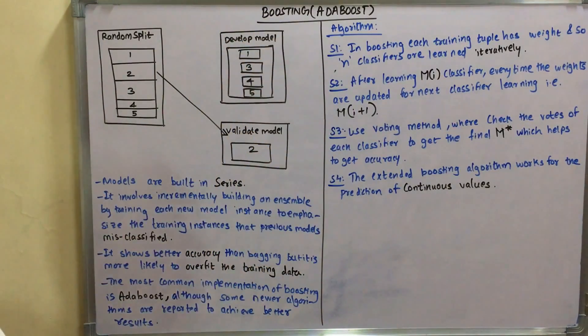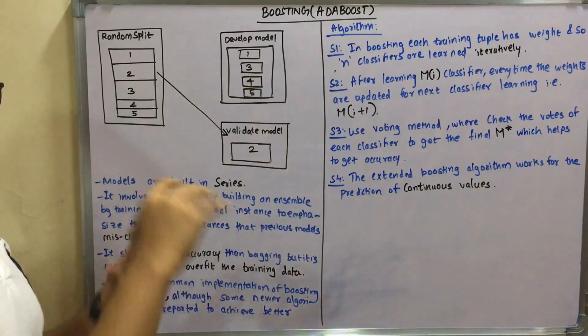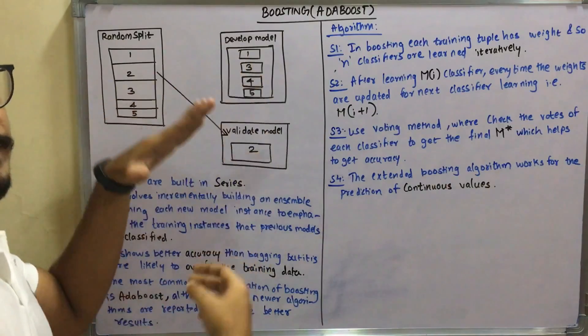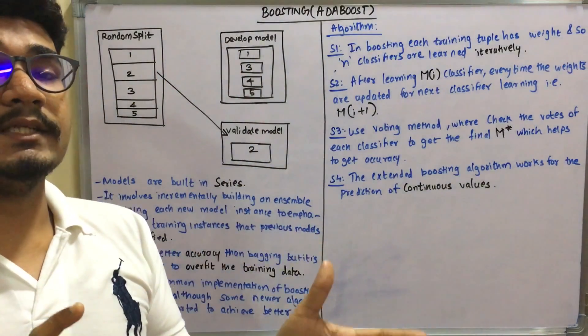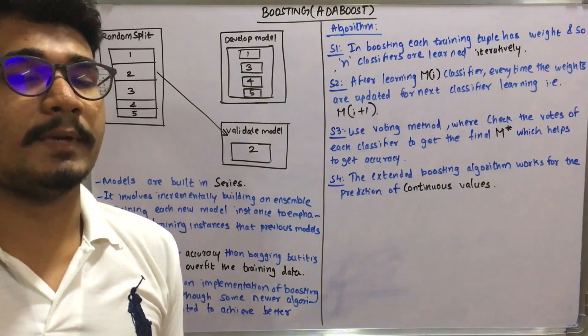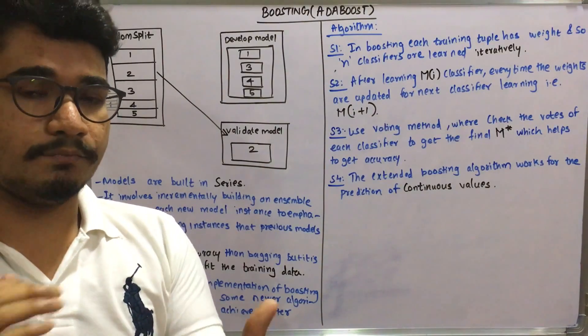So three will be my valid model. Likewise, I just change all the values and keep it in validate model, and I just shuffle these values and check whether the value of all these are the same or not. I will be doing it in an incremental manner.